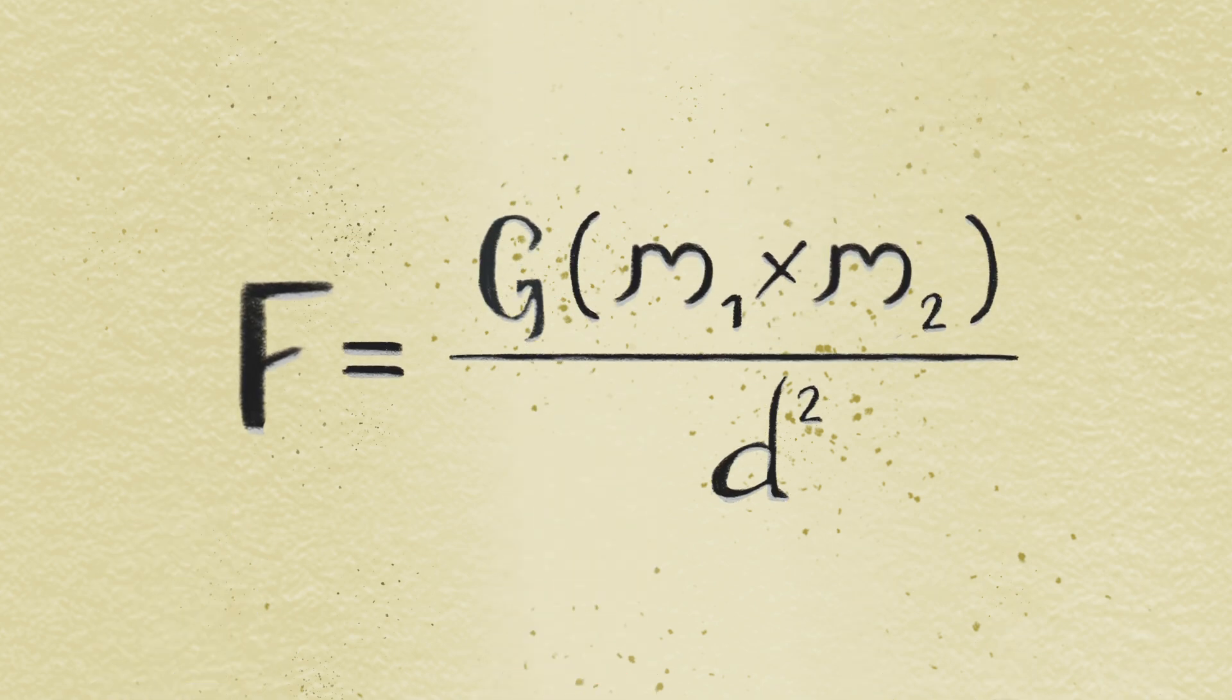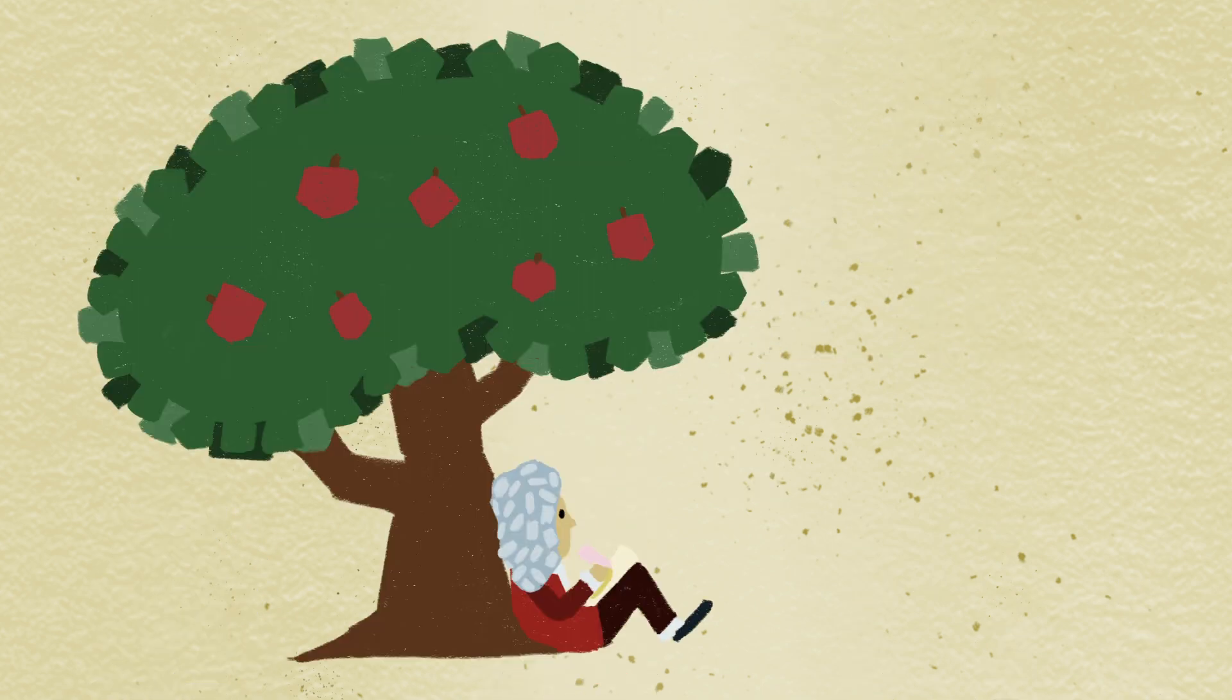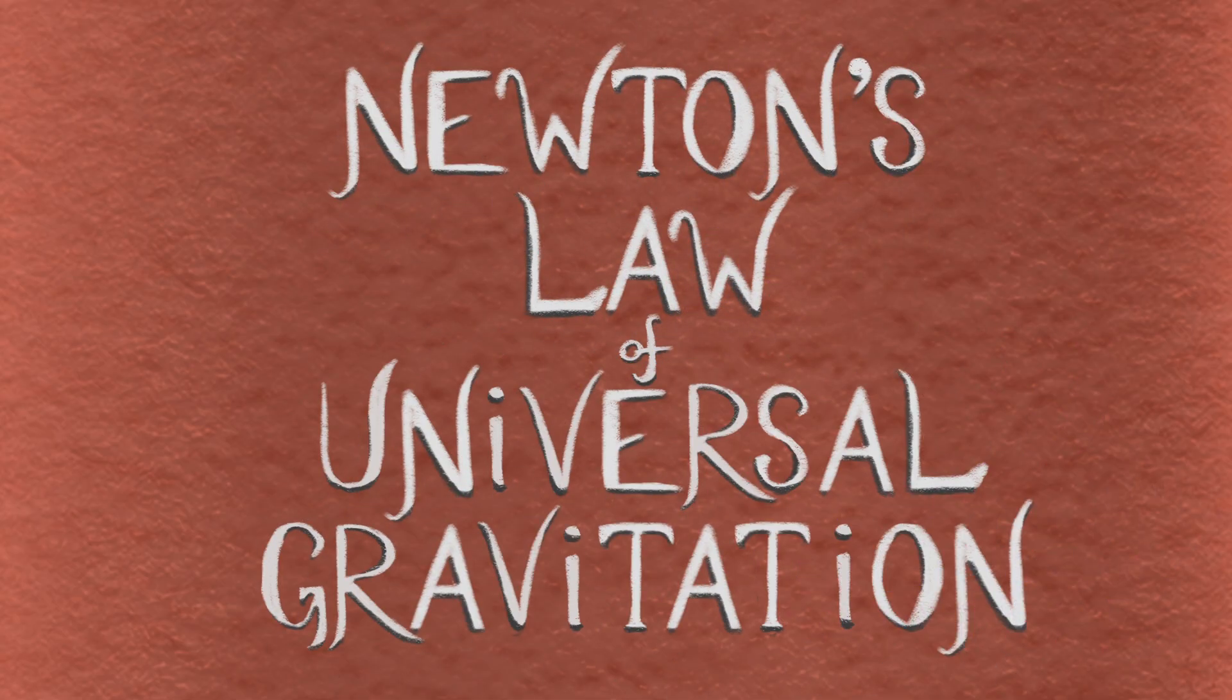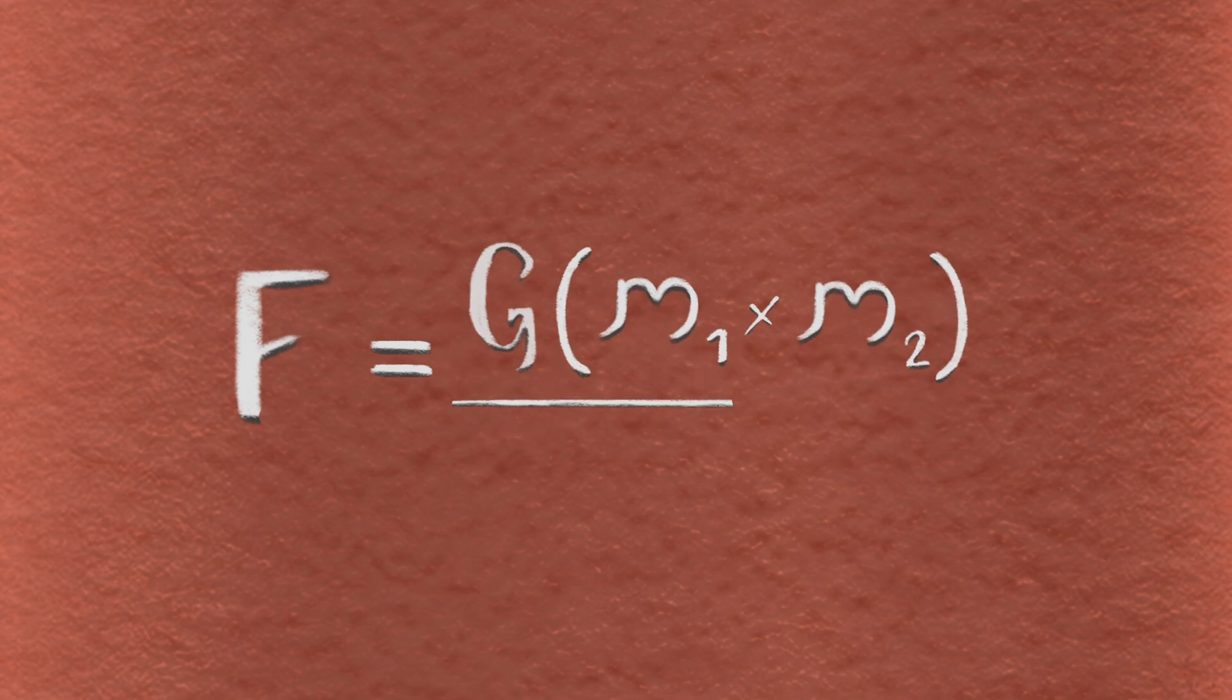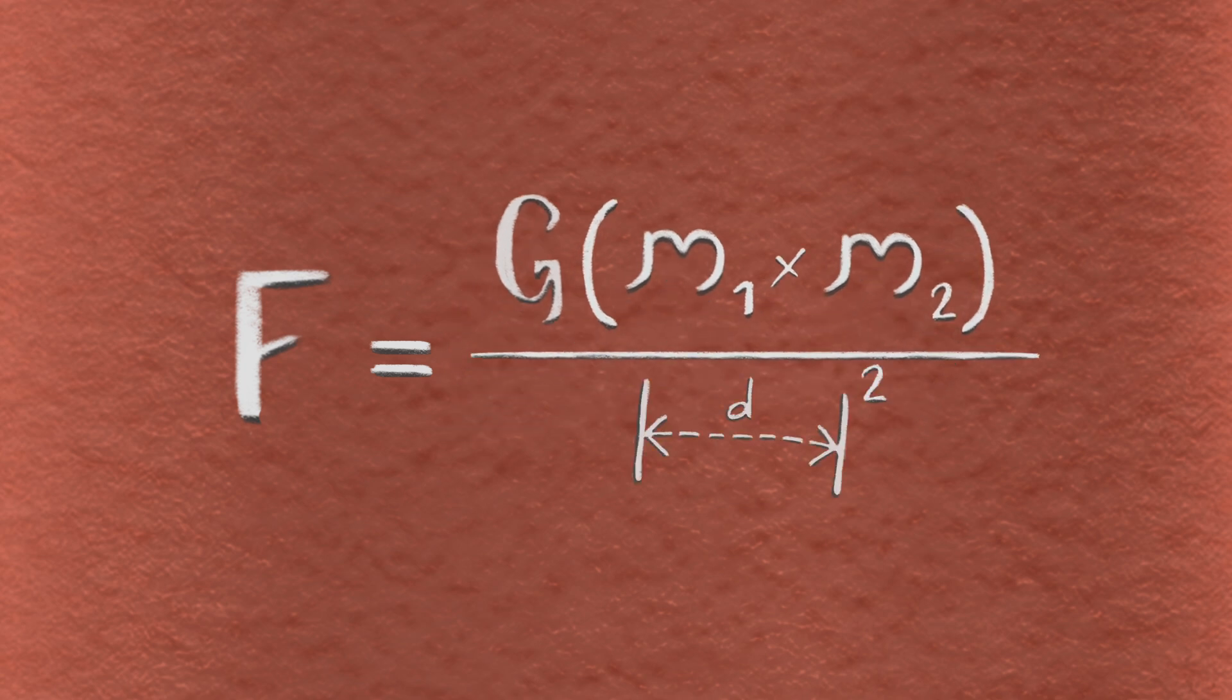The original equation describing the gravitational force between two objects was written by Isaac Newton in 1687. Scientists' understanding of gravity has evolved since then, but Newton's law of universal gravitation is still a good approximation in most situations. It goes like this. The gravitational force between two objects is equal to the mass of one times the mass of the other, multiplied by a very small number called the gravitational constant, and divided by the distance between them, squared.